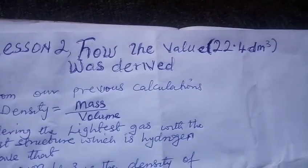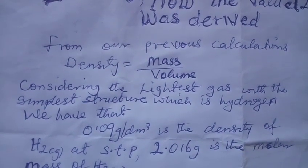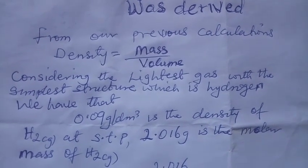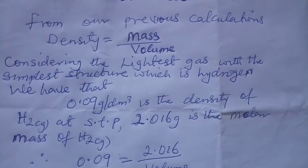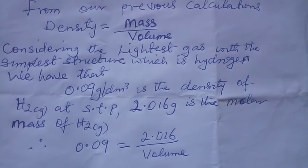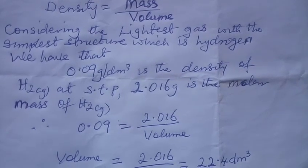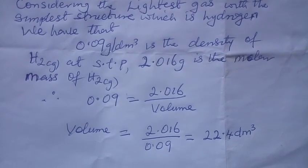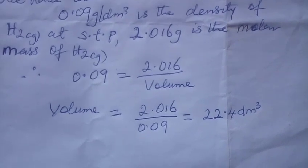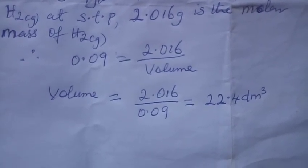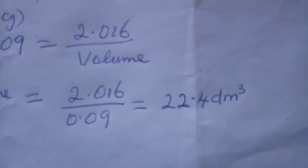How can we explain how the value 22.4 dm³ is derived? From our previous calculations, density is equal to mass over volume. Considering the lightest gas with the simplest structure, which is hydrogen gas, we have that 0.09 g per dm³ is the density of hydrogen gas at STP. 2.016 gram is the molar mass of hydrogen gas. Therefore, applying the formula density equals mass over volume, we have that 0.09 equals 2.016 over volume, which is unknown. Then volume being made the subject of the formula is equal to mass over density. Applying this for hydrogen gas, we have 22.4 dm³ as our final answer. That is dividing 2.016 by 0.09.